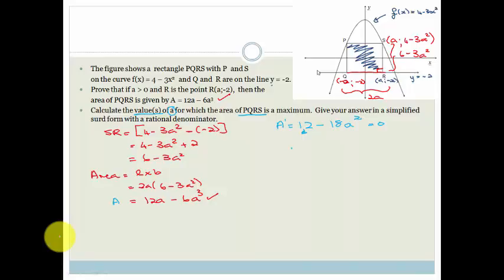We're going to let it equal 0. So therefore we can say that 12 minus 18A squared is equal to 0. So we can take the 12 across. So we've got minus 18A squared is equal to negative 12. Therefore we've got that A squared is equal to negative 12 over 18. So we can simplify that. A squared is equal to, the minus and the minus cancel, which is great. What goes into both 12 and 18? 6.